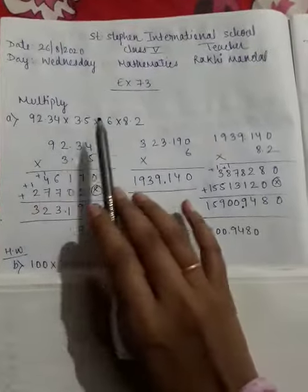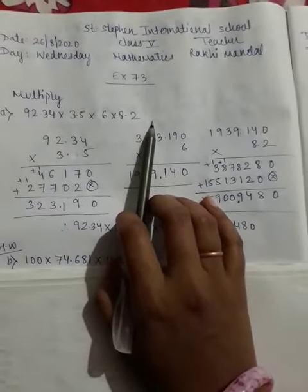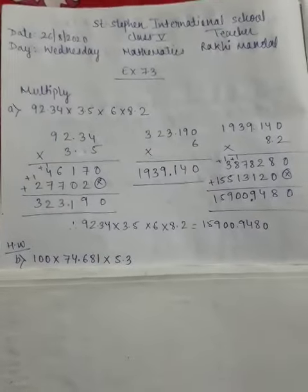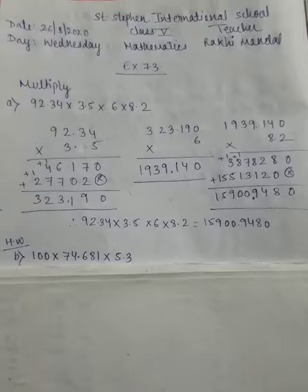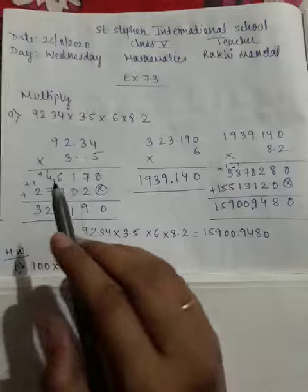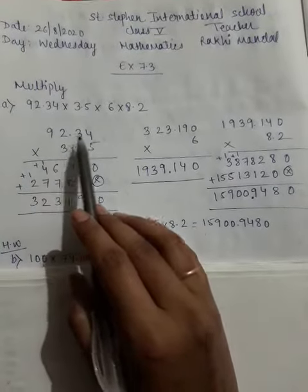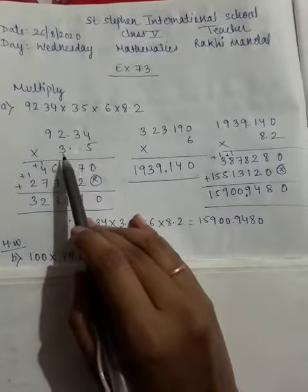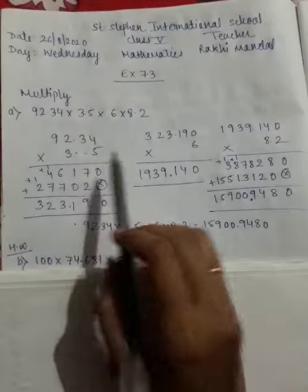multiply by 8.2. So how many numbers? 1, 2, 3, 4, okay? Now we will learn how to do the product in decimal. First is 92.34 multiply by 3.5.